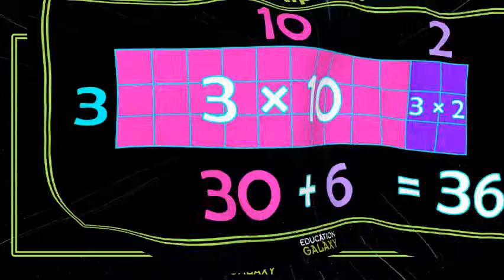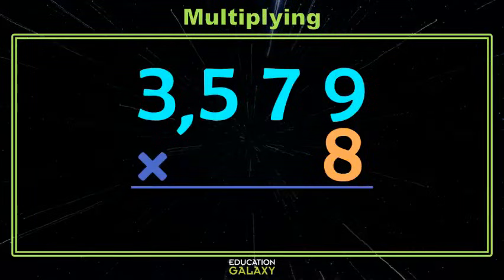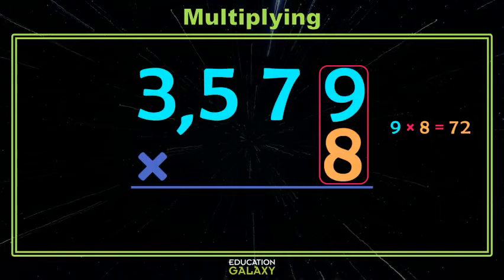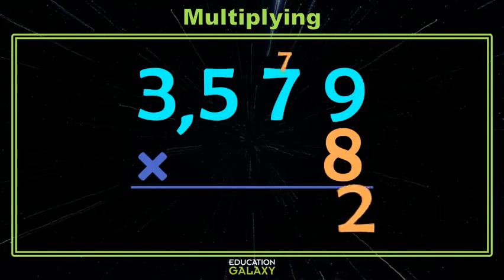Okay, now it's time to multiply some bigger numbers. Here we're going to start in the ones place, multiplying the 9 and the 8, which we know is 72. We can't fit all of that in the ones place, so we put the 2 in the ones and carry the 7.